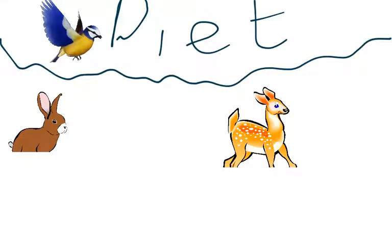Bobcats will eat birds, deer, rabbits. They will also eat rats. They eat squirrels, and they mostly eat meat. So they're carnivores. Meat eaters are carnivores.